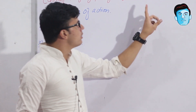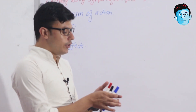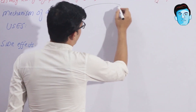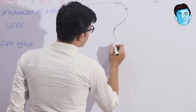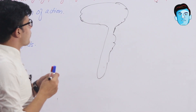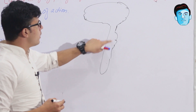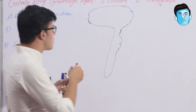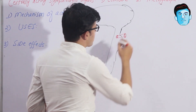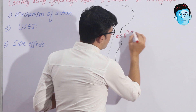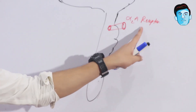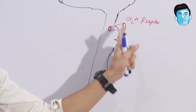Clonidine and methyl dopa share the same mechanism of action. Let's look at this diagram — this is the brain: midbrain, pons, and medulla, and this is the spinal cord. This region of midbrain, pons, and medulla is called the brain stem. In this area we have a specific receptor called the alpha-2a receptor, located in the vasomotor center of the brainstem.